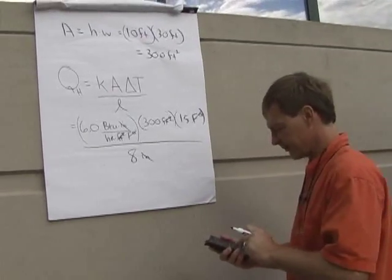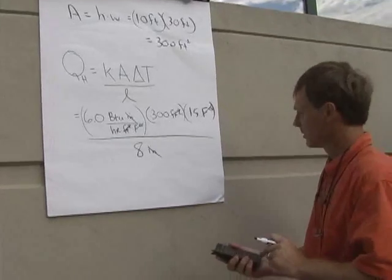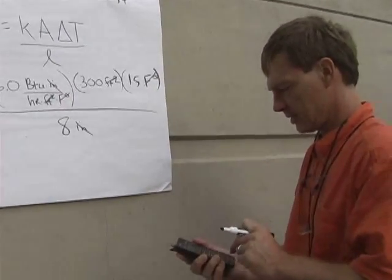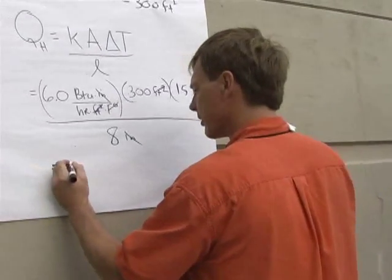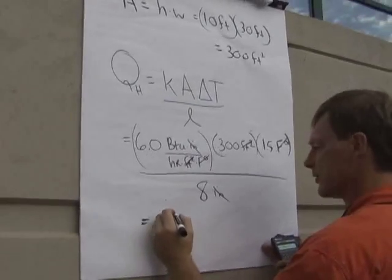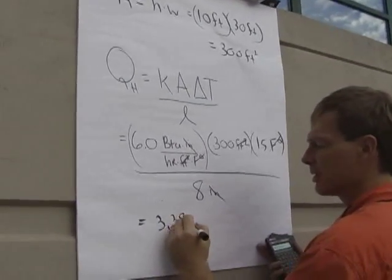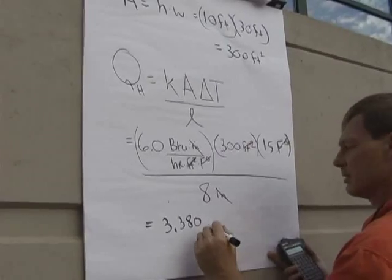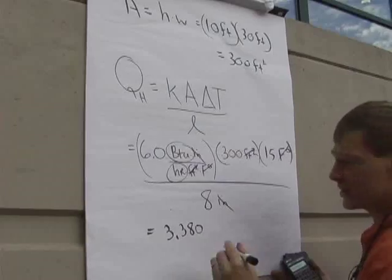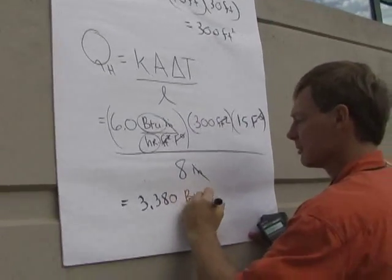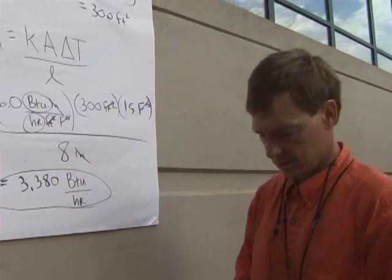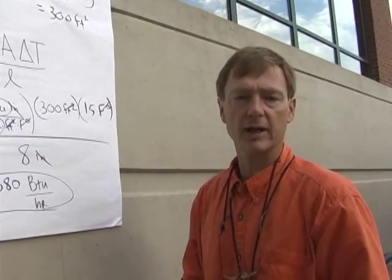That's going to be 6 times 300 times 15, divided by 8, which gives about 3,380. All I've got left are BTUs per hour, which is great — that's heat transfer rate: 3,380 BTUs per hour. And that's how you calculate heat transfer rate across a material.